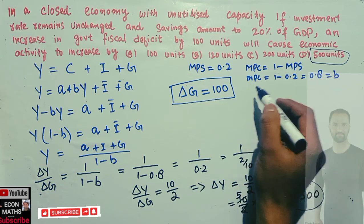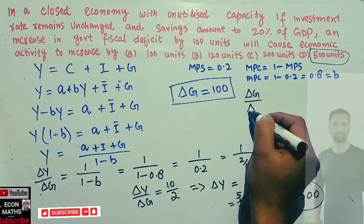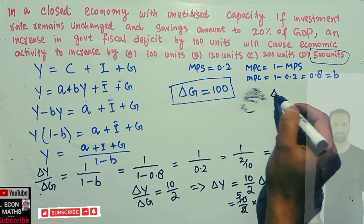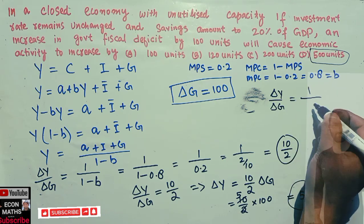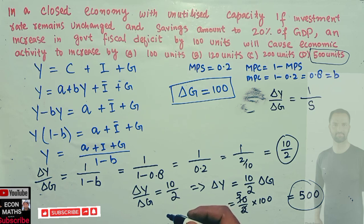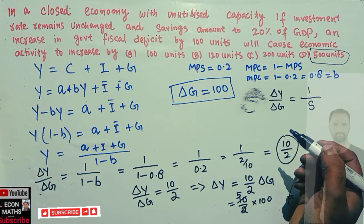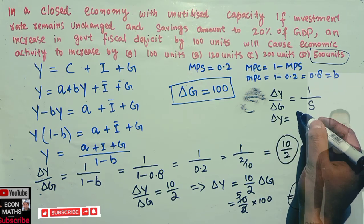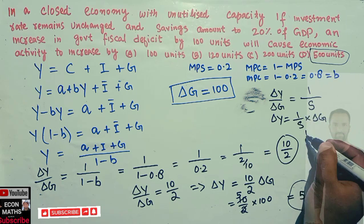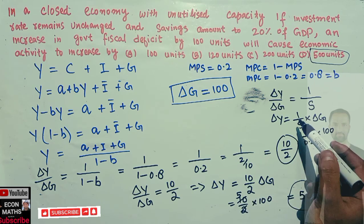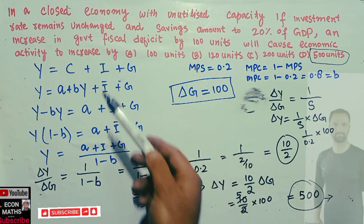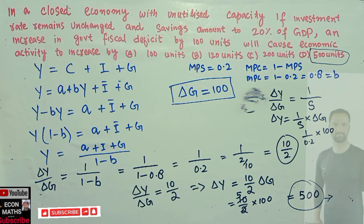You can also calculate it simply: the change in Y when there is a change in government expenditure equals 1 divided by the marginal propensity to save. Since the saving rate is 20% of GDP, ΔY = (1/s) × ΔG = (1/0.2) × 100 = 500. I derived it step by step so you could see where this formula comes from. I hope you like these videos — please share them with your economics friends, as that will be the motivation for me to keep going. Thank you.